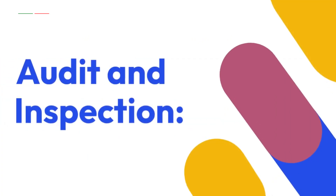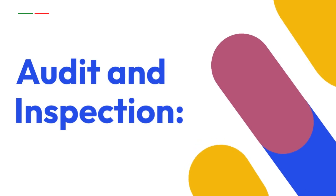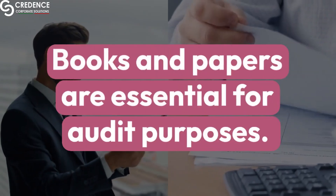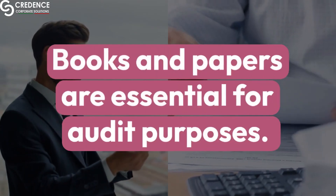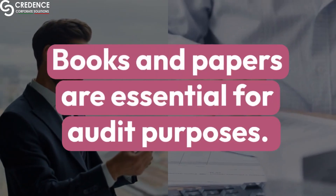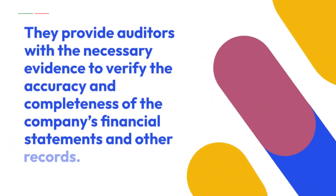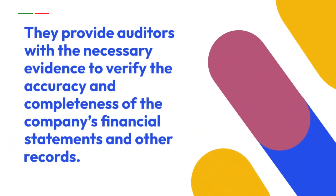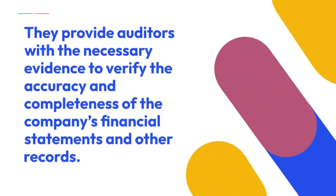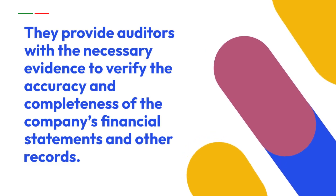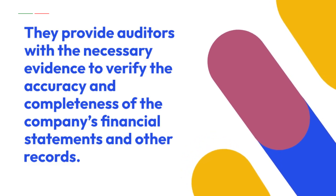Importance: Audit and Inspection. Books and papers are essential for audit purposes. They provide auditors with the necessary evidence to verify the accuracy and completeness of the company's financial statements and other records.